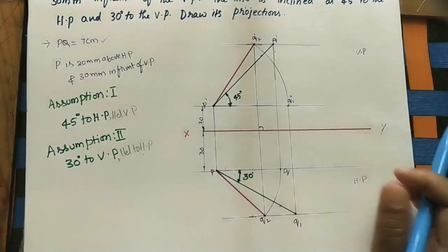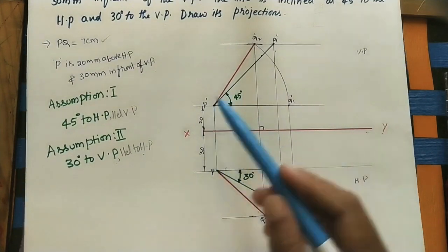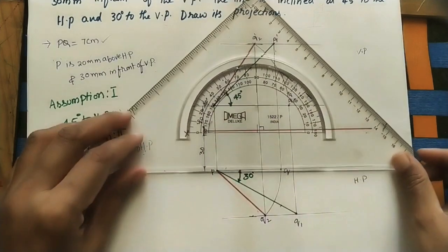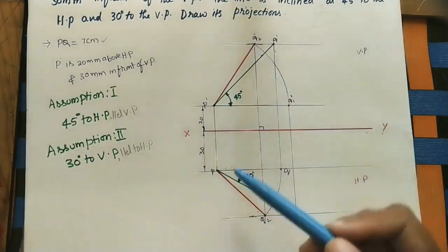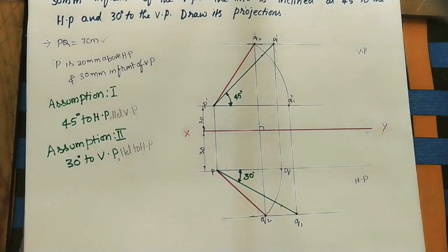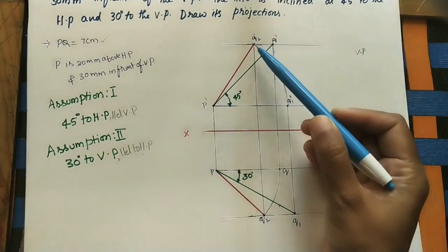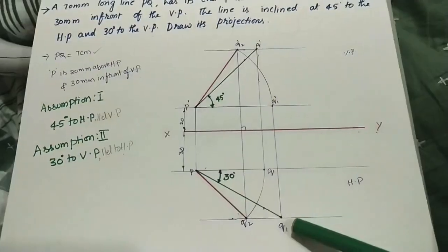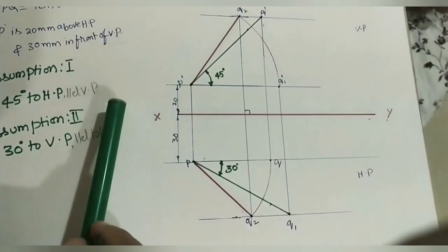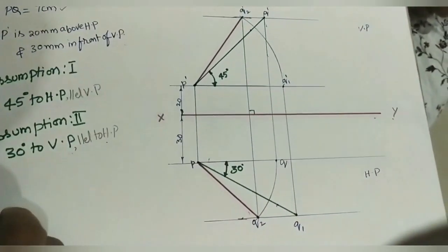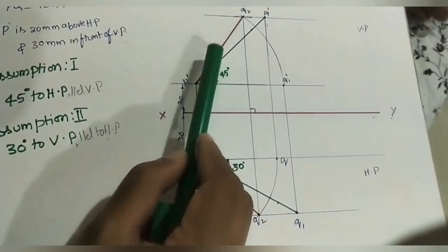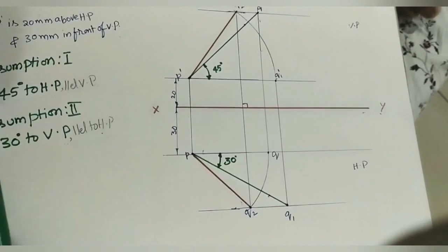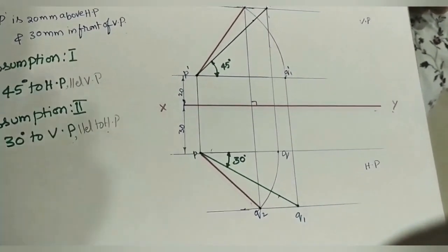Mark the given dimensions: P is 20 mm above HP and 30 mm in front of VP. Mark the angles and check whether the projector line makes 90 degrees using a protractor. If it's 90 degrees, the final front view and top view lengths are correct. Sometimes questions ask for the final front view or top view length — measure with the scale. They may also ask for the angle the final front view makes with HP or the final top view makes with VP — measure using the protractor.